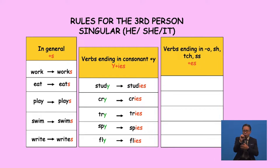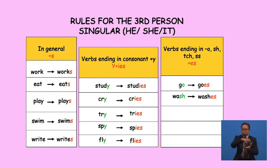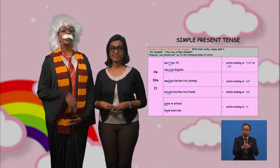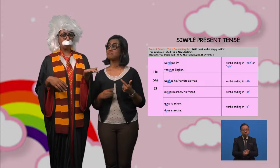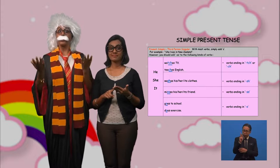Lastly, for verbs ending in O, S, SH, TCH, X, and double S, we add ES. Look at the examples: go → goes, wash → washes, watch → watches, mix → mixes, kiss → kisses. Some more examples: teaches English, watches TV, goes to school, does exercise, studies English.